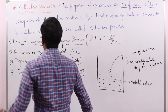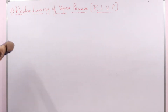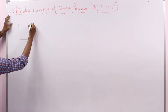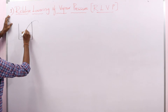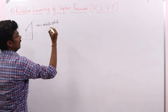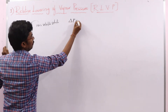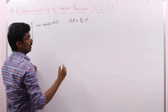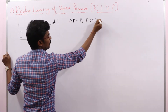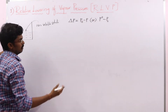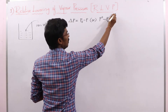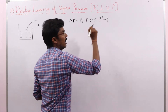Now let us see relative lowering of vapor pressure. When I am adding a non-volatile solute to the pure volatile solvent, the vapor pressure is going to decrease. The decrease I am showing with respect to delta P. Delta P equals P0 minus PS, because P0 is the greater vapor pressure of pure solvent. P0 is the vapor pressure of pure solvent; PS is the vapor pressure of solution which contains a non-volatile solute.